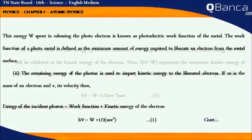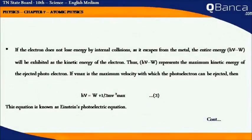If the electron does not lose energy by internal collision as it escapes from the metal, the entire energy hν minus W will be exhibited as kinetic energy of the electron. Thus, hν minus W represents the maximum kinetic energy of the ejected photoelectron.